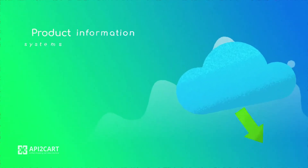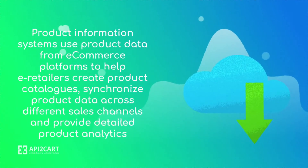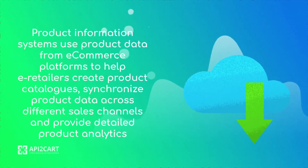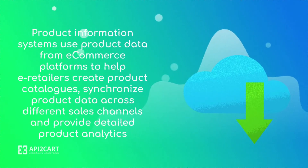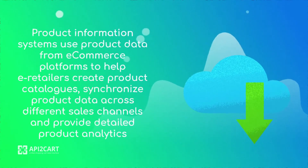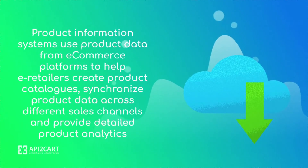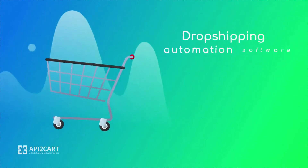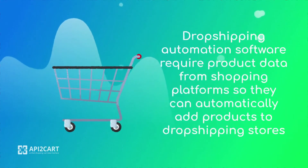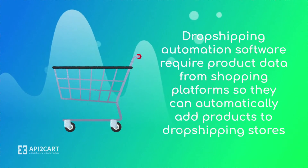Product information systems use product data from e-commerce platforms to help e-retailers create product catalogs, synchronize product data across different sales channels, and provide detailed product analytics. Dropshipping automation software requires product data from shopping platforms so they can automatically add products to dropshipping stores.